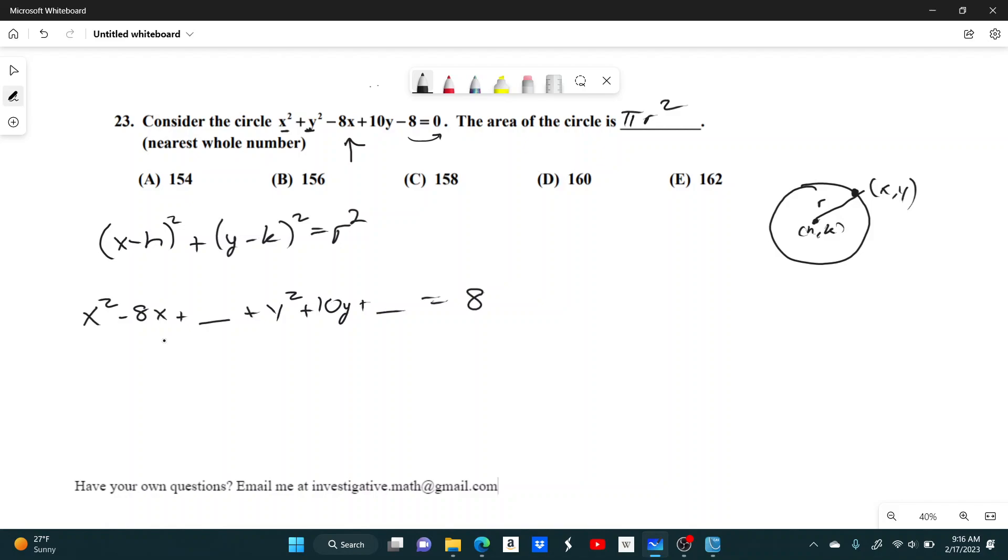Now to complete the square, here's what you do. So you take the coefficient of your linear term. So in this case, that's 8x, or negative 8x, rather. You divide it by 2, which gives you negative 4, and then you square it. So that gives you plus 16.